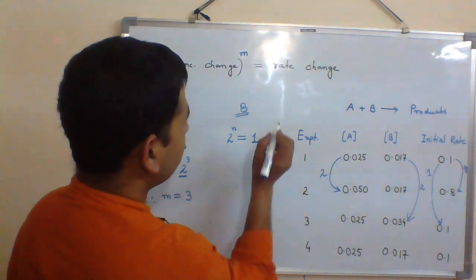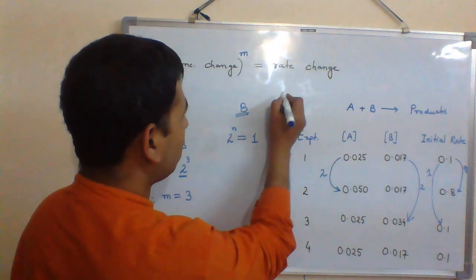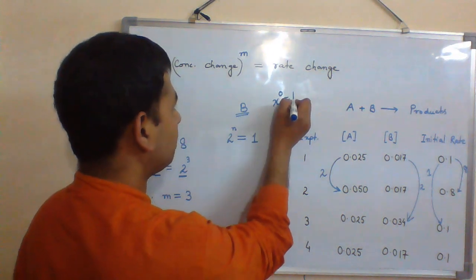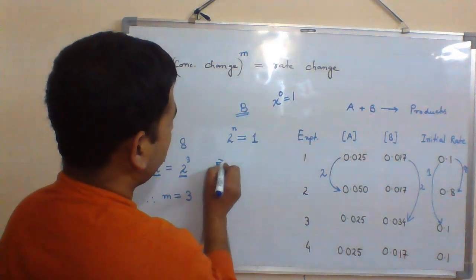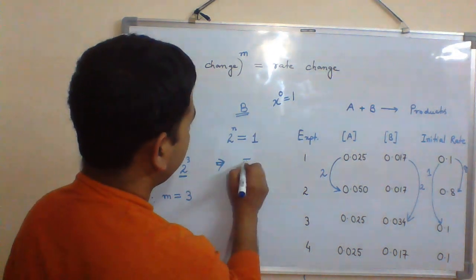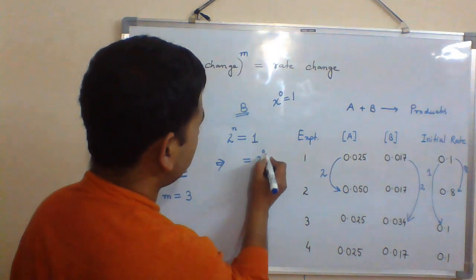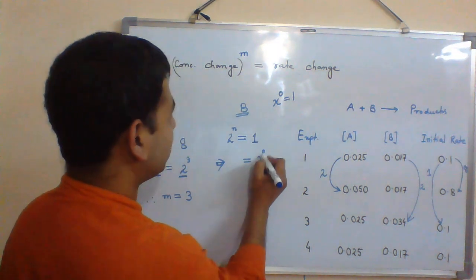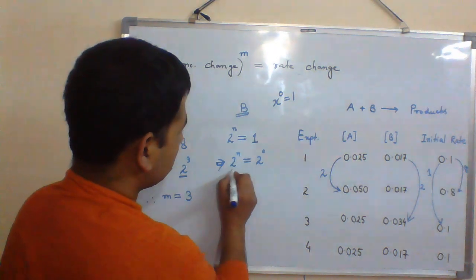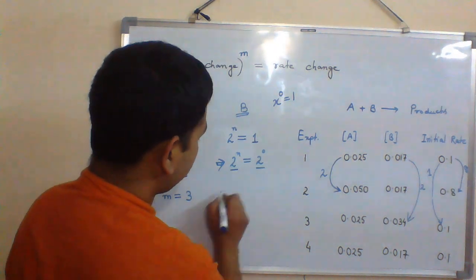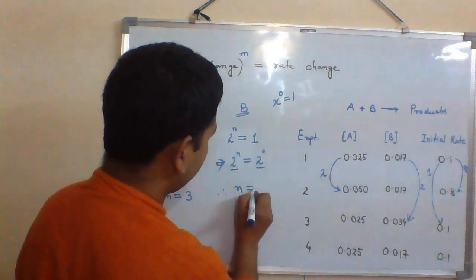We know that anything power 0 is equal to 1. So we write 2 power 0, which is 1, equal to 2 power M. Since these two are the same, M becomes 0.